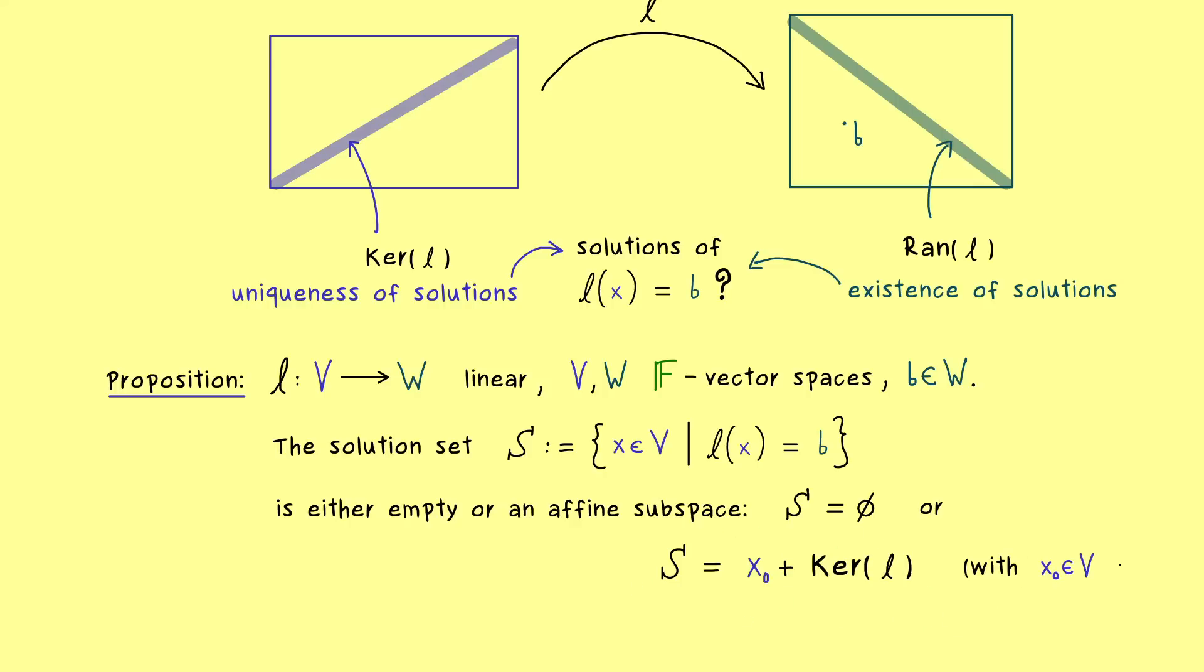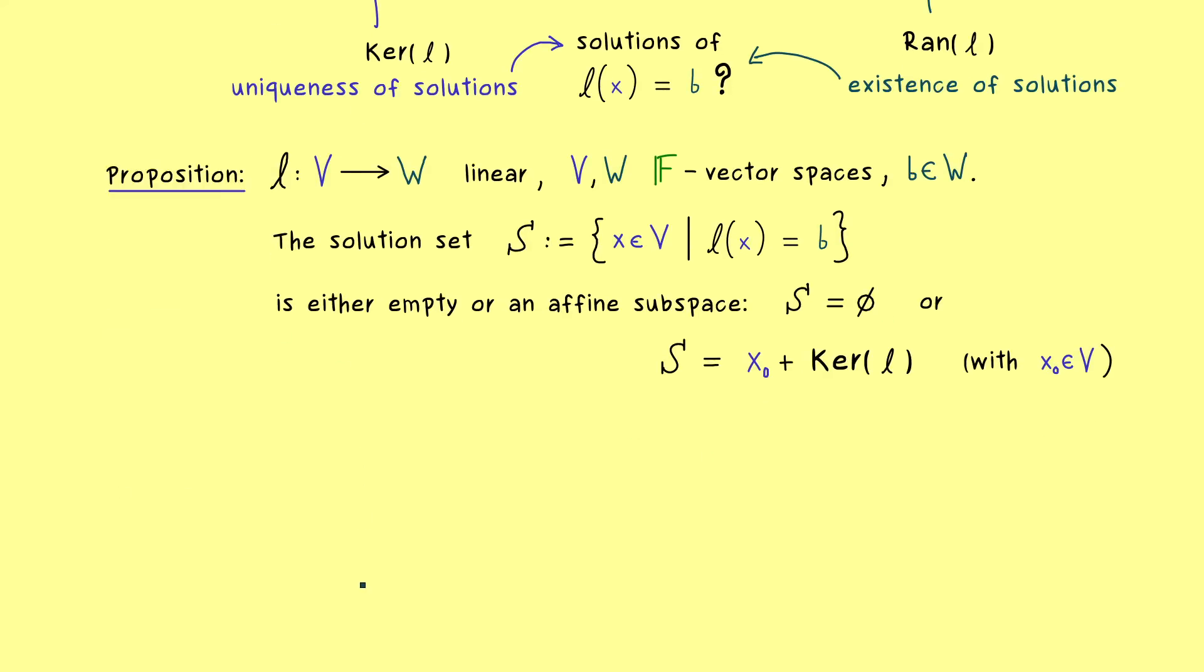So you see this is exactly the same result as we had it in the matrix case. And now turns out that even the proof is exactly the same again. However, for the sake of completeness let's quickly write it down again. So let's assume that S is not the empty set so that we find at least one x₀ in it. Explicitly, this means if we put x₀ into l we get out the vector b.